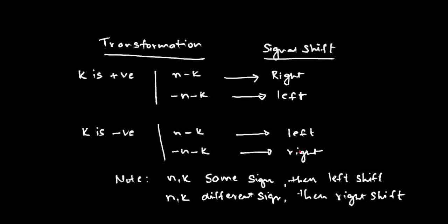This is only a tip to easily memorize this concept. However, there is no need to memorize it by heart if you understand how k affects the signal — k affects n minus k or minus n minus k. You can apply the same concept for continuous time signals, where instead of n you will have t, giving t minus k or minus t minus k. Shift the signal accordingly to the left or right.